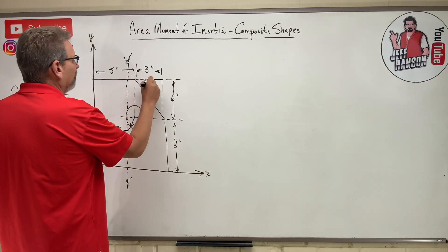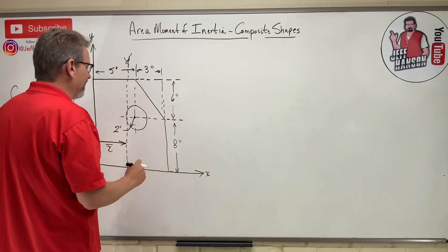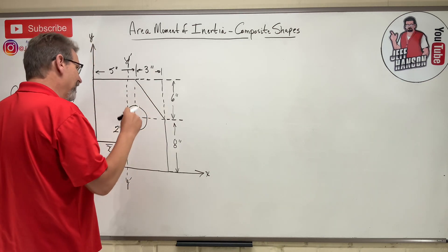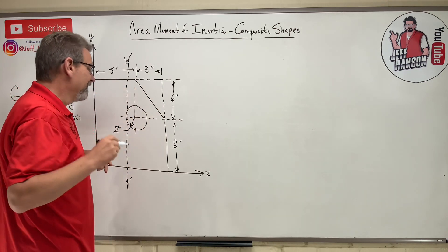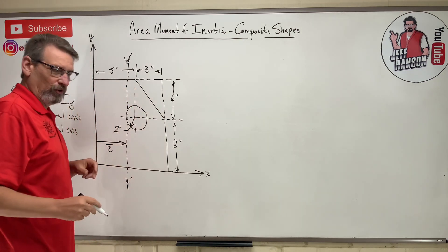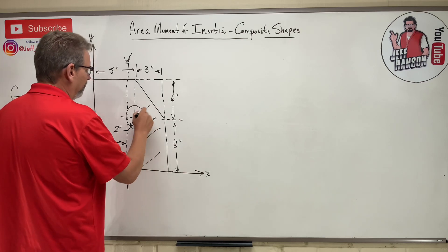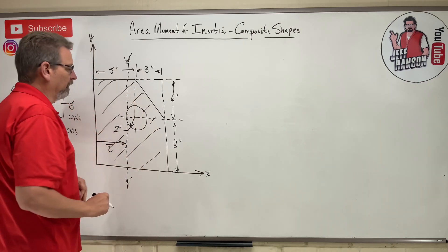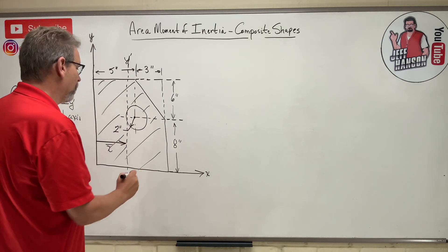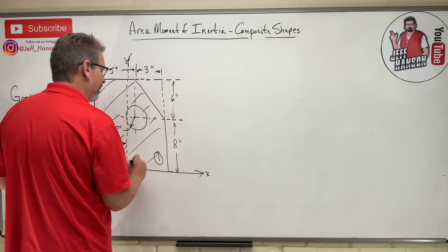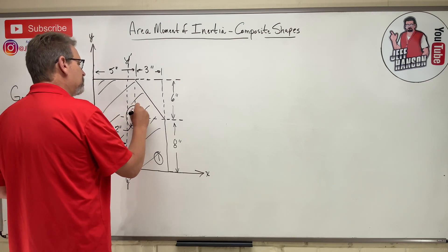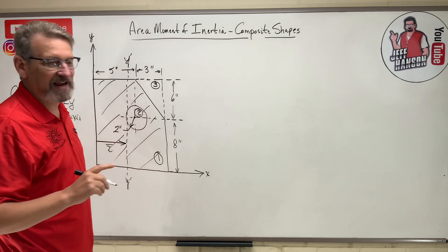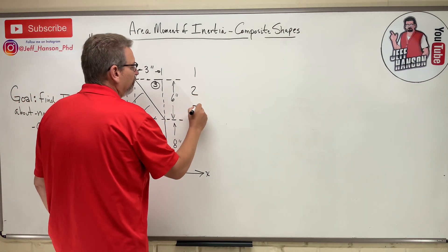What I would do is make this into one big rectangle, subtract off a triangle, and subtract off the circle — that leaves me with the shape I'm trying to find x-bar for. I'll call the big rectangle piece number one, the circle piece number two, and the triangle piece number three. Let's use our table method.